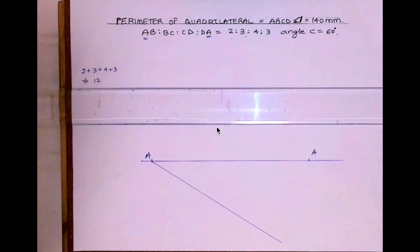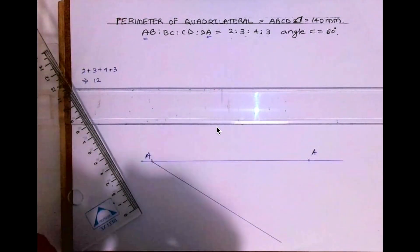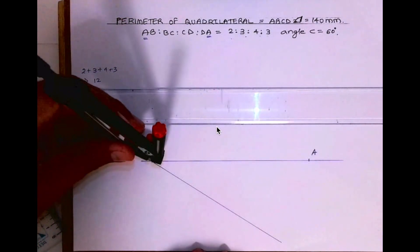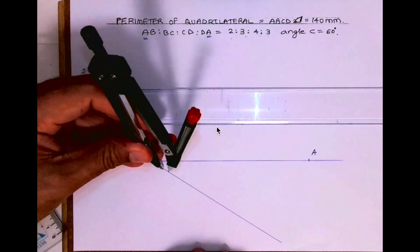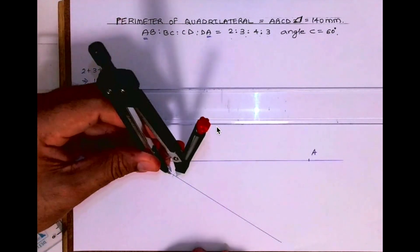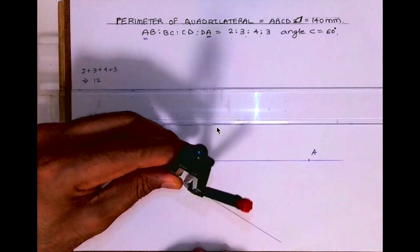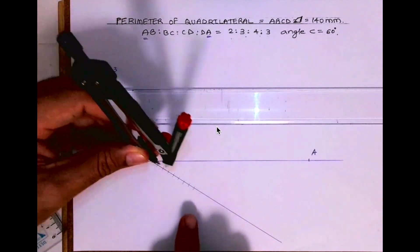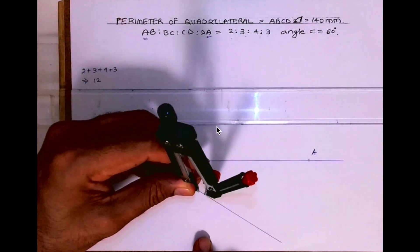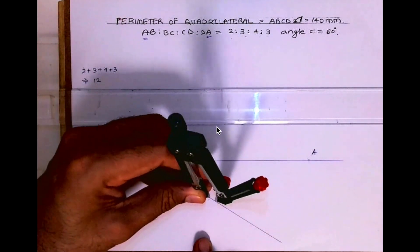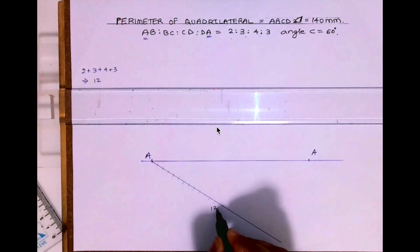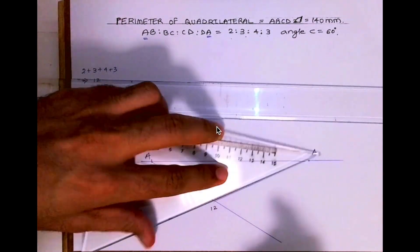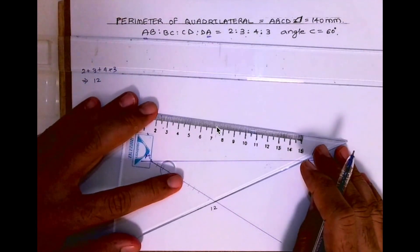I will take any interval — preferably 1 cm or 5 mm, it's up to you. You can take however much you want. I am taking 5 mm, so anywhere between 5 mm to 1 cm you can take. You can cut 12 equal parts. So this is 12 — mark it, then join 12 to A. So now we will divide line AA into 12 parts.